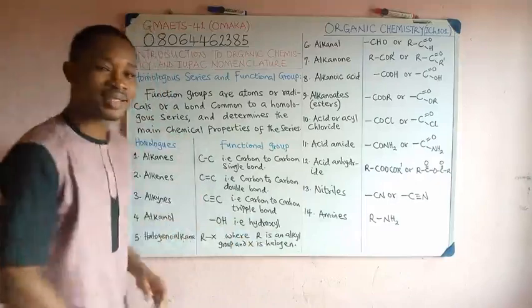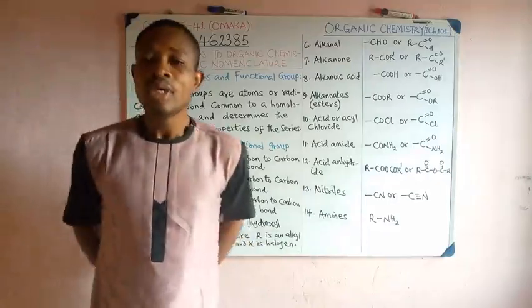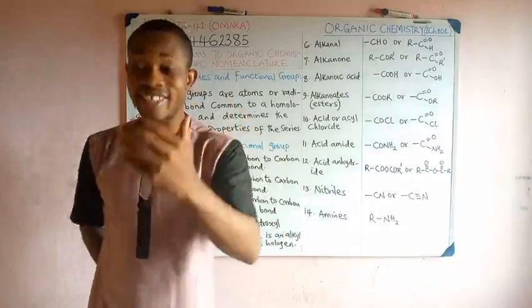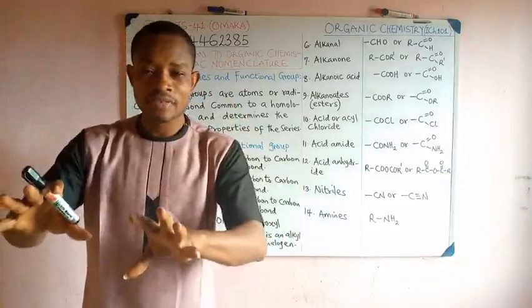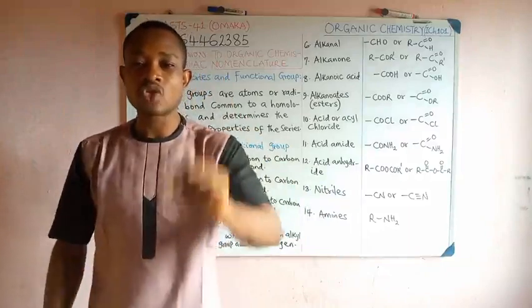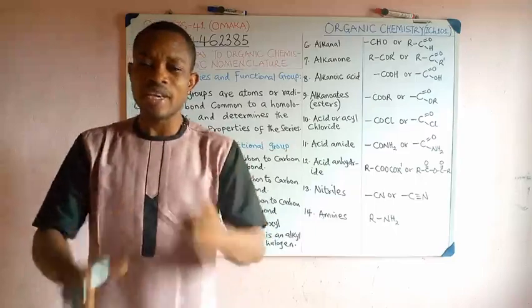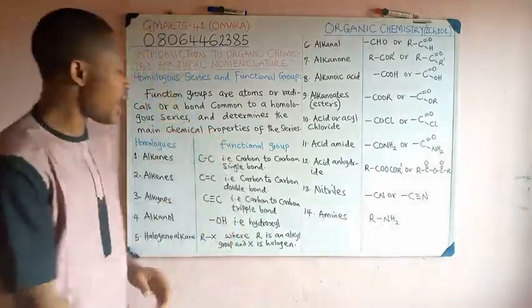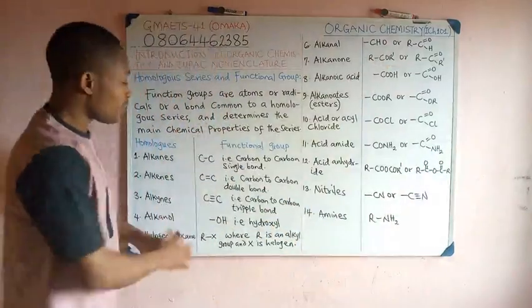Knowing the name of these homologues is not the problem. Being able to remember or identify their functional group, that atom, that radical, that bond that determines the main chemical property of the group is the most important thing. You have them here, please you want to go through them.